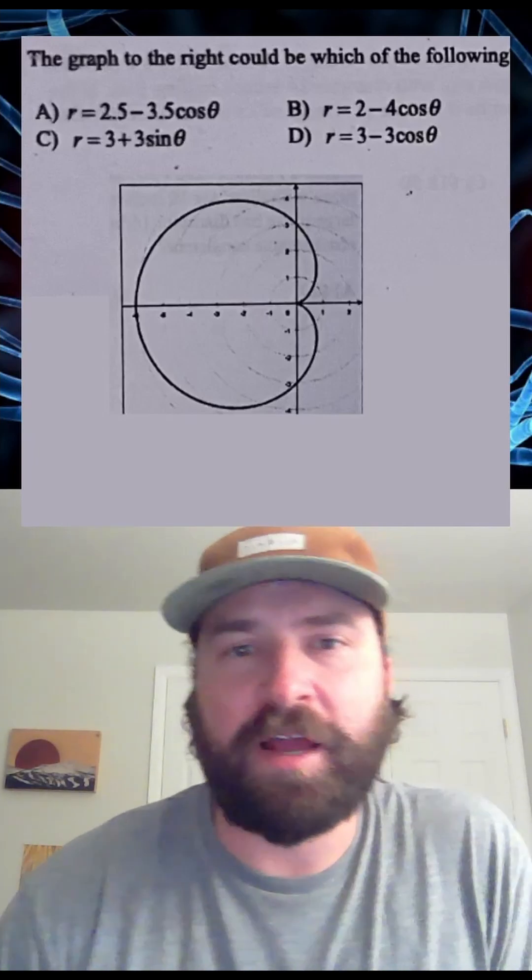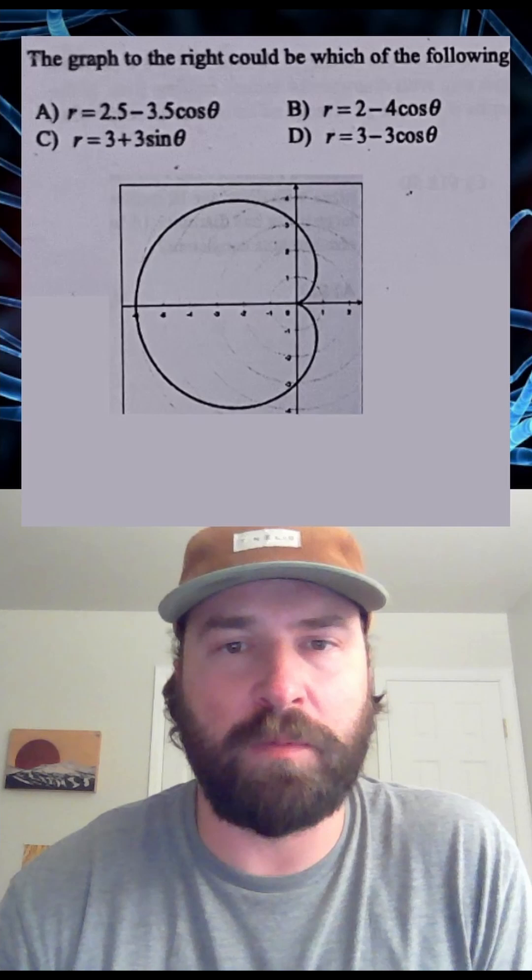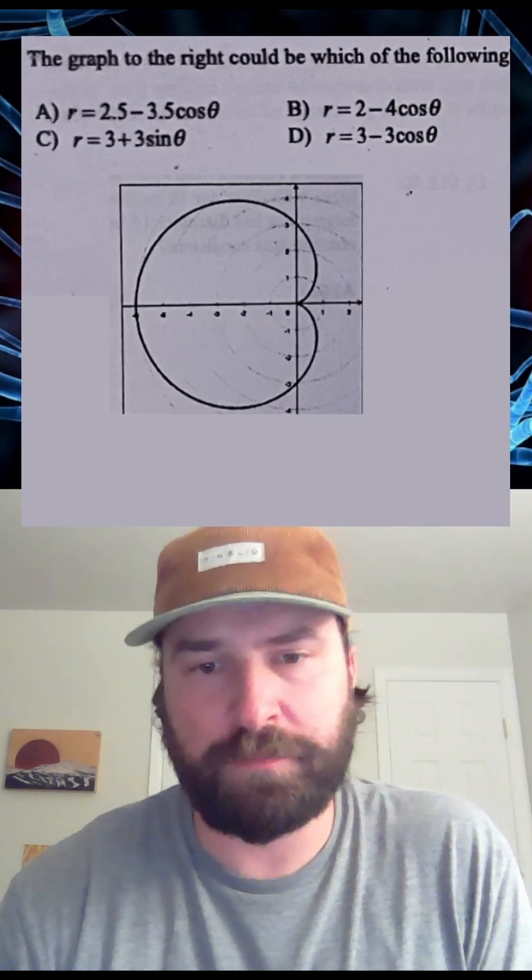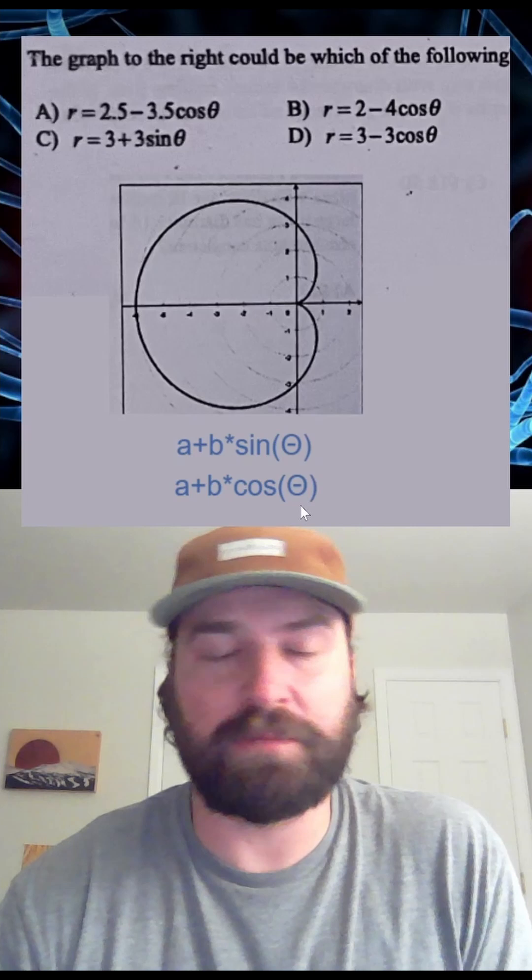What's cracking, y'all? Today we're going to be diving into a pre-calculus topic called a Lima cone, which is a type of graph that results from these types of polar equations. So something looks like this: a plus b times sine or a plus b times cosine.